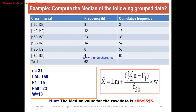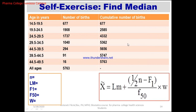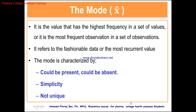It seems a little complex, but it's not difficult when you practice. Just practice by working through the calculations. There is also a self-exercise: find the median for the given data. You need to determine N, LM (lower limit of median class), F1 (cumulative frequency before median class), F50 (median class frequency), and W (width), then calculate.